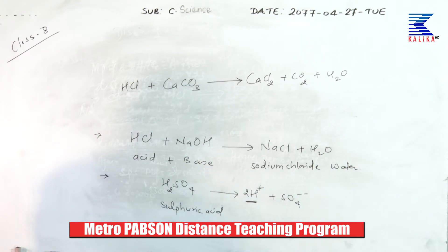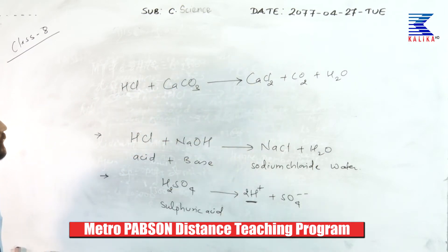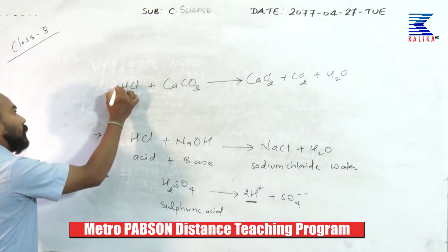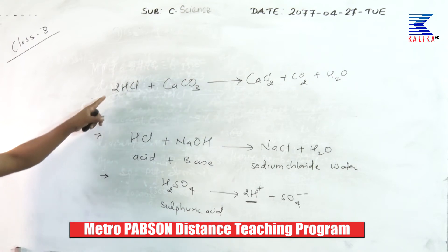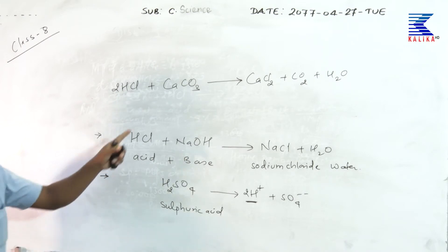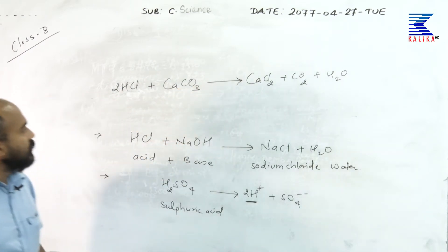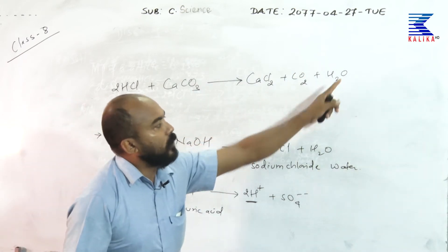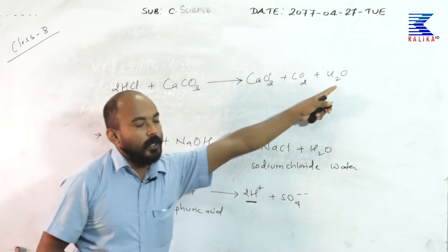First count the number of calcium: 1 on each side — balanced. Then count chlorine: here 1 and here 2, so multiply coefficient 2 to HCl. Then the number of hydrogen becomes 2, chlorine becomes 2. Check carbon: 1 on each side. Check oxygen: 3 on the left and 2+1=3 on the right. Check hydrogen: 2 on each side — balanced.